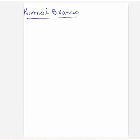The first thing I had you learn was the types of accounts. ALORE stands for your assets, liabilities, owner's equity accounts, revenues, and expenses. So now we're going to talk about normal balances, and the way you memorize normal balances is to memorize this sentence: